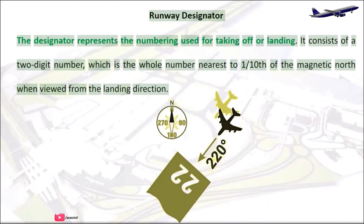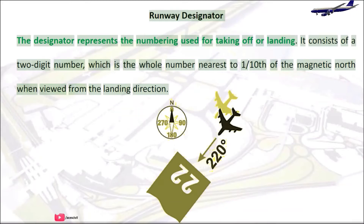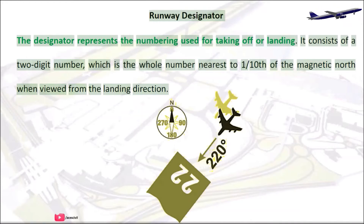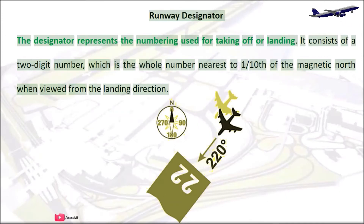Runway Designator: The designator represents the numbering used for taking off or landing. It consists of a two-digit number, which is the whole number nearest to one-tenth of the magnetic north when viewed from the landing direction.